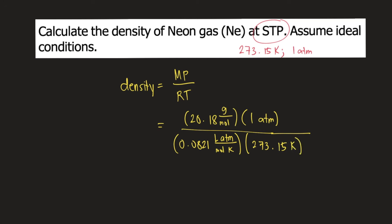Let's see how the units cancel. Moles will cancel, atm will cancel, Kelvin will also cancel. So the unit for density would be grams over liter.